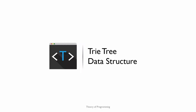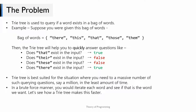Hello everyone, welcome to Theory of Programming. In this video I'm going to explain the Trie tree data structure, which is a very fast and easy to implement search tree. A Trie tree is used to query if a word exists in a bag of words. For example, given a collection of words — there, this, that, those, them — a Trie tree will help you answer queries asking if a certain word exists very quickly. You can ask the Trie tree: does 'that' exist in the input? Yes it does. Does 'these' exist? Nope, it doesn't.